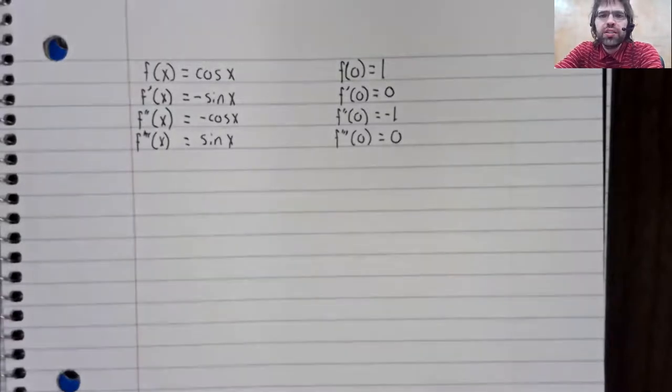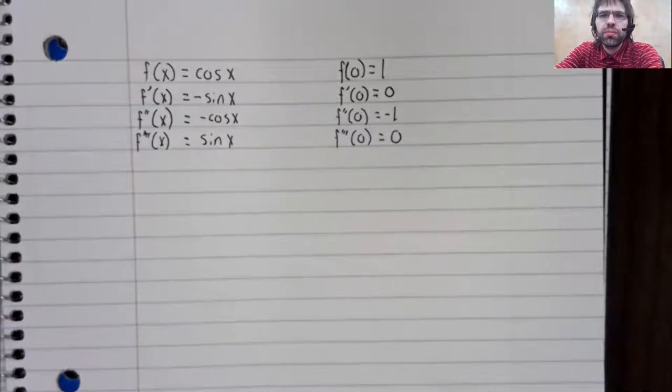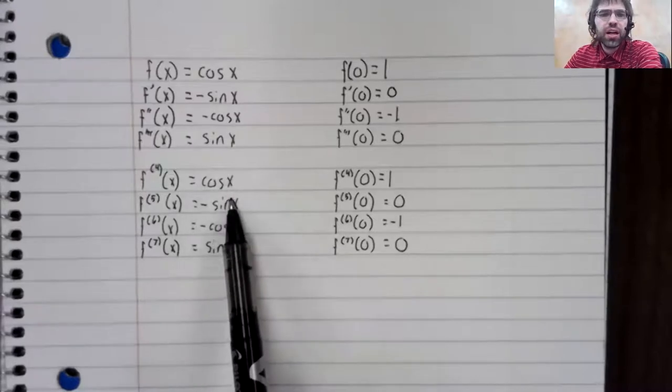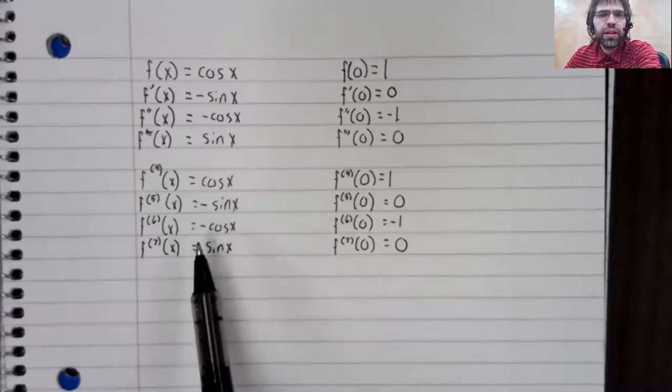If I now write down the next four derivatives, we see again, cosine, negative sine, negative cosine, sine.